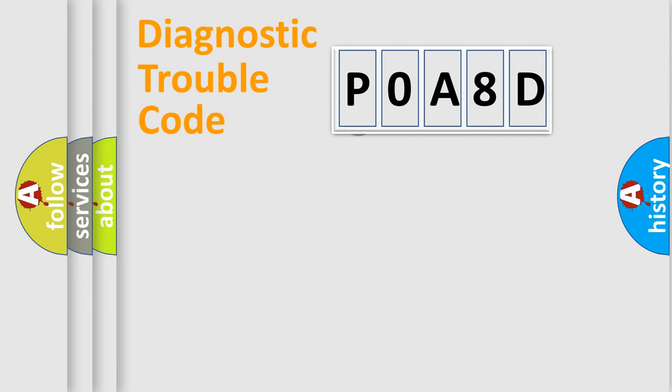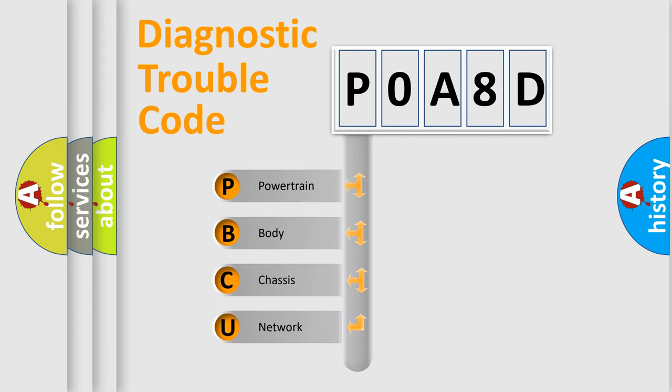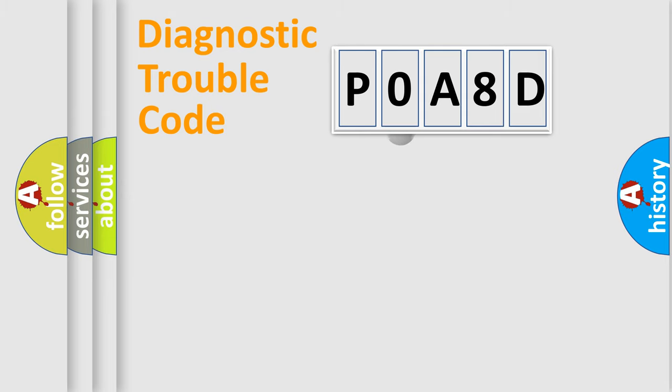First, let's look at the history of diagnostic fault code composition according to the OBD2 protocol, which is unified for all automakers since 2000. We divide the electric system of automobiles into four basic units: Powertrain, Body, Chassis, and Network. This distribution is defined in the first character code.